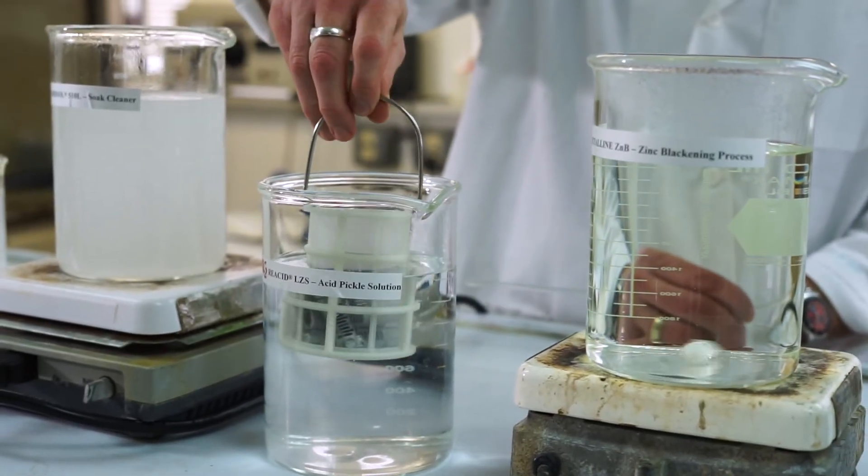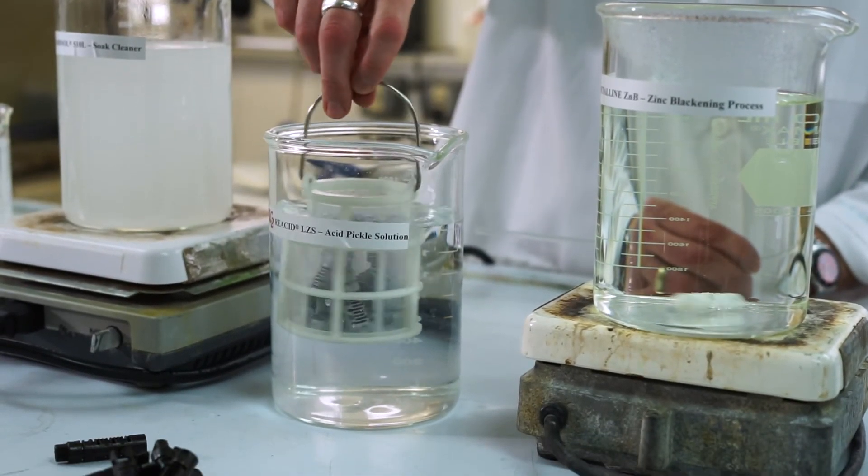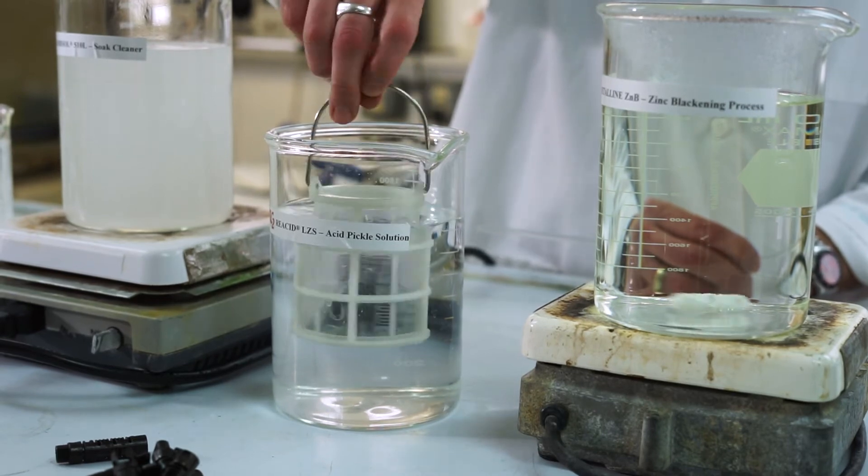Reacid LZS is made up at 3% by volume and only requires a short immersion time to prepare the zinc surface for blackening.